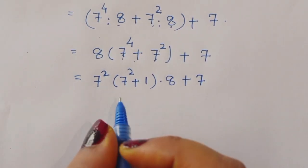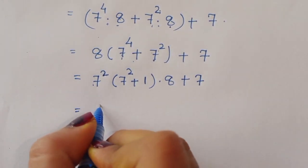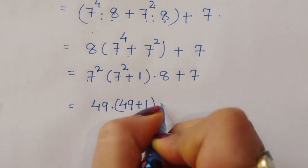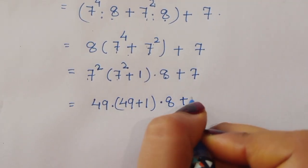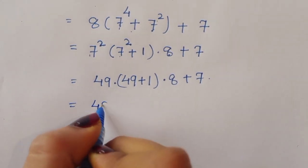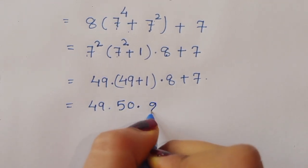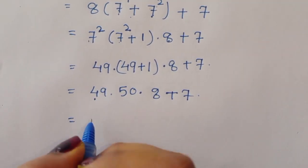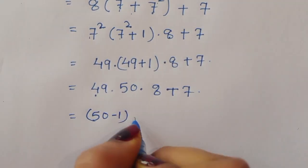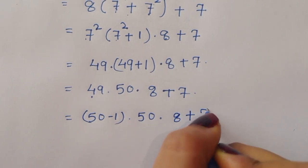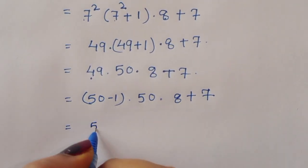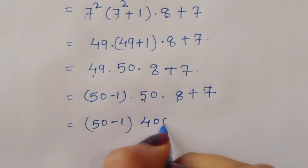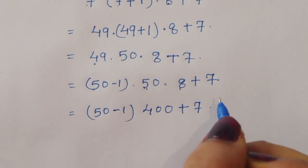Now 7 power 2 is 49, so we write 49 times (49 plus 1) times 8, plus 7. That gives us 49 times 50 times 8, plus 7. Now we can write 49 as 50 minus 1, so we have (50 minus 1) times 50 times 8, plus 7, which gives 400 plus 7.